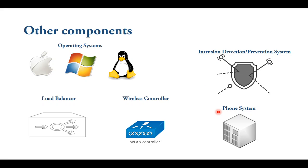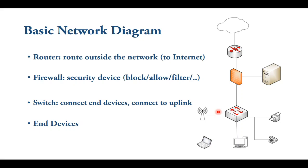This is a basic network diagram — don't worry about the location of each device. Typically, a switch connects the end devices: access points, workstations, phones, and printers. Access points provide Wi-Fi signals for wireless devices. You have a firewall protecting a service or your internal network, and a router that connects you to the cloud or to the internet.